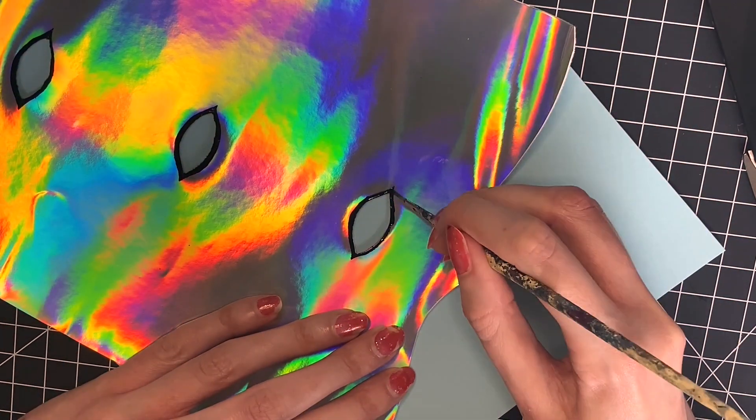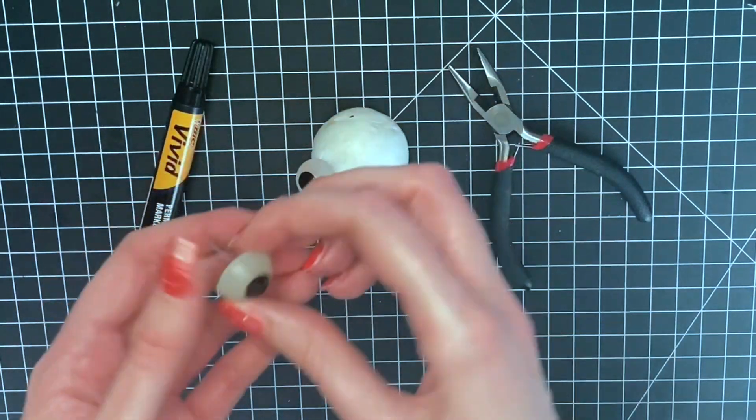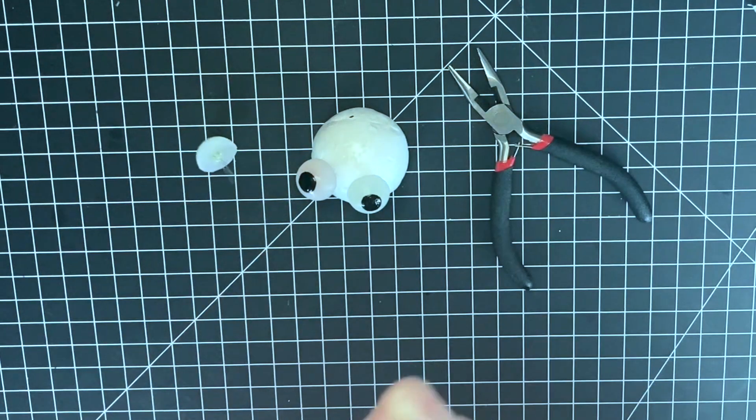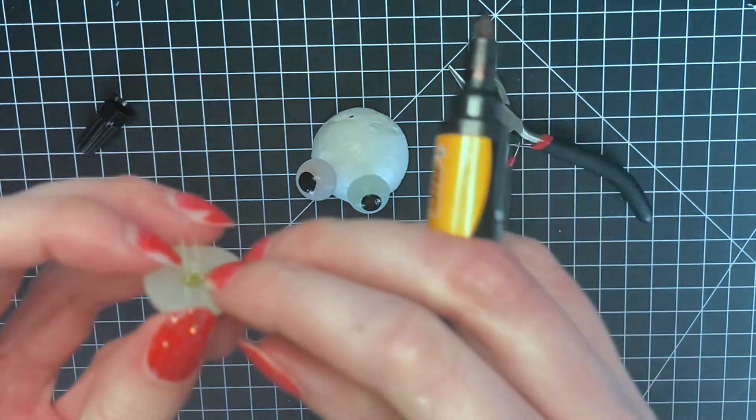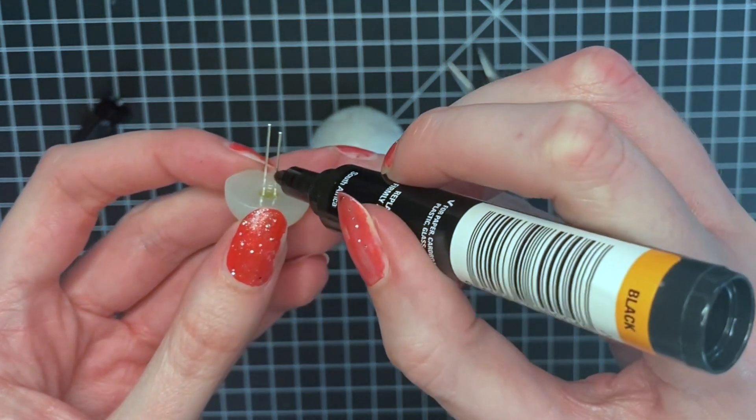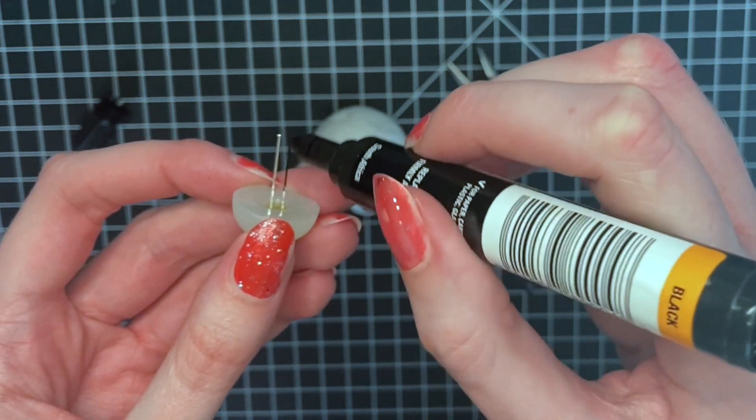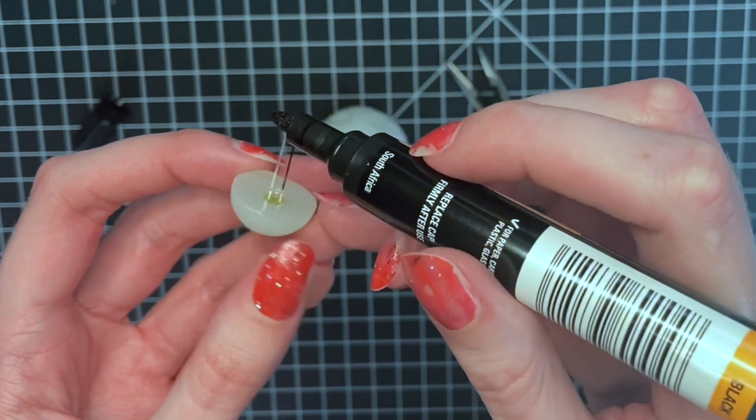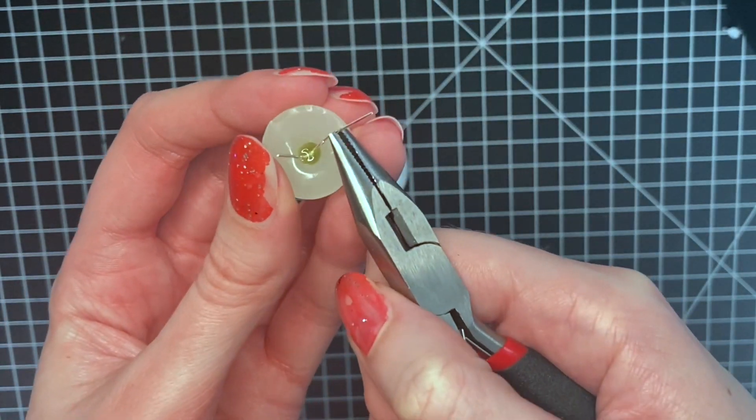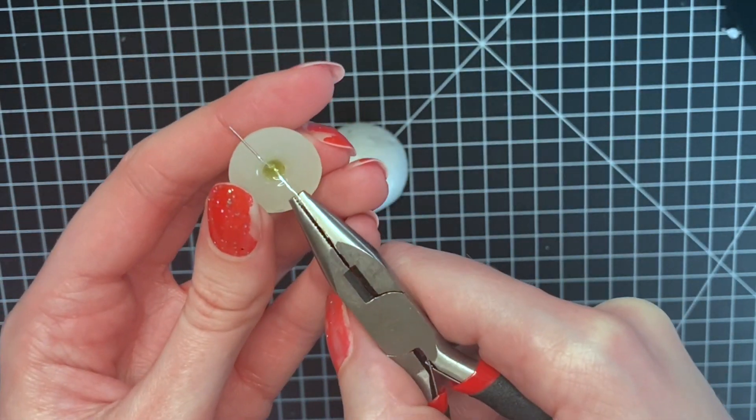The next step is prepping the LEDs. Because I am using standard LEDs the legs need to be bent into loops. Before doing this I need to mark one of the legs to help me remember which is which. Here I am marking the short leg which is the negative. Just bending the legs flat and making loops big enough for my sewing needle to pass through.